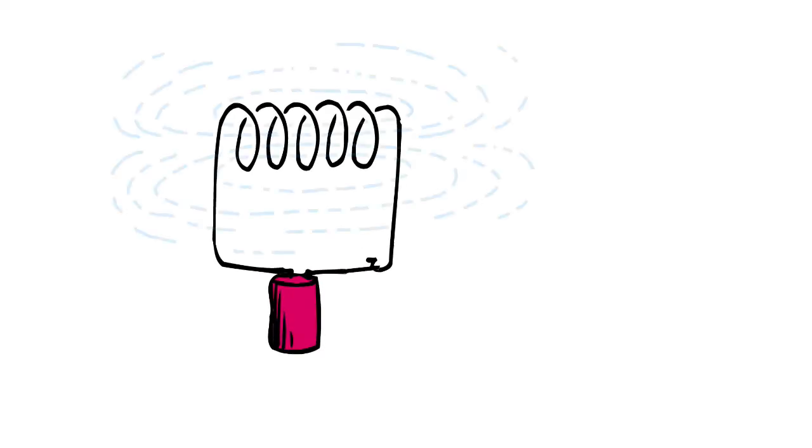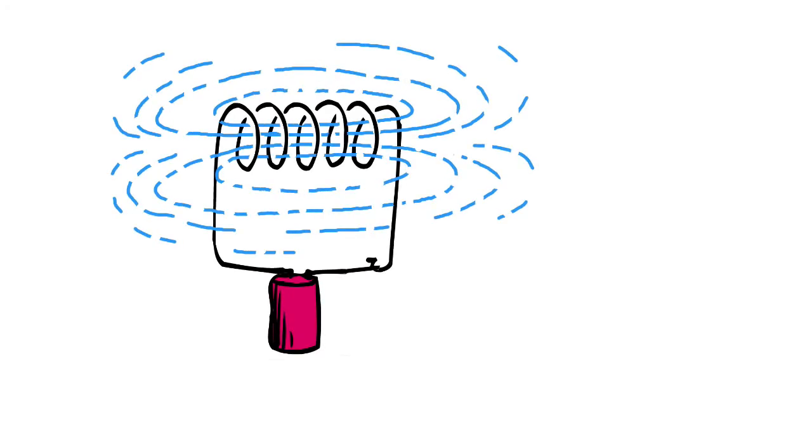A current passes through a coil of wire. As a result, a magnetic field forms through those coils of wire.